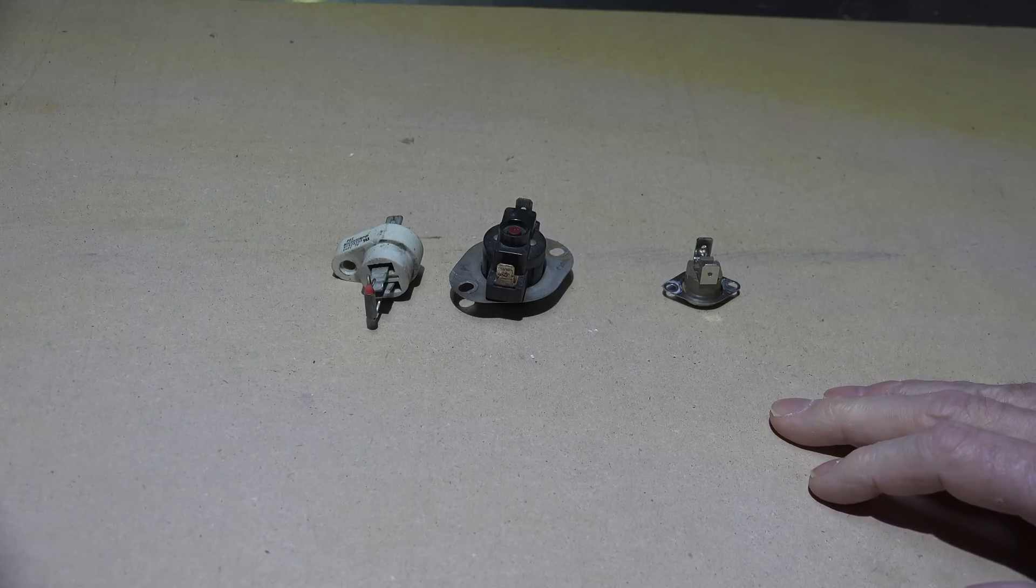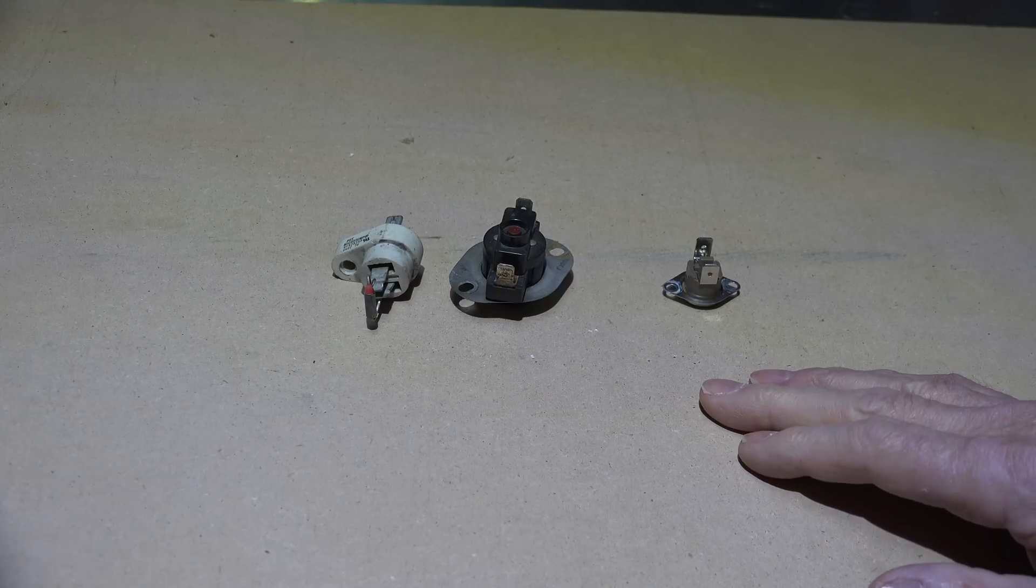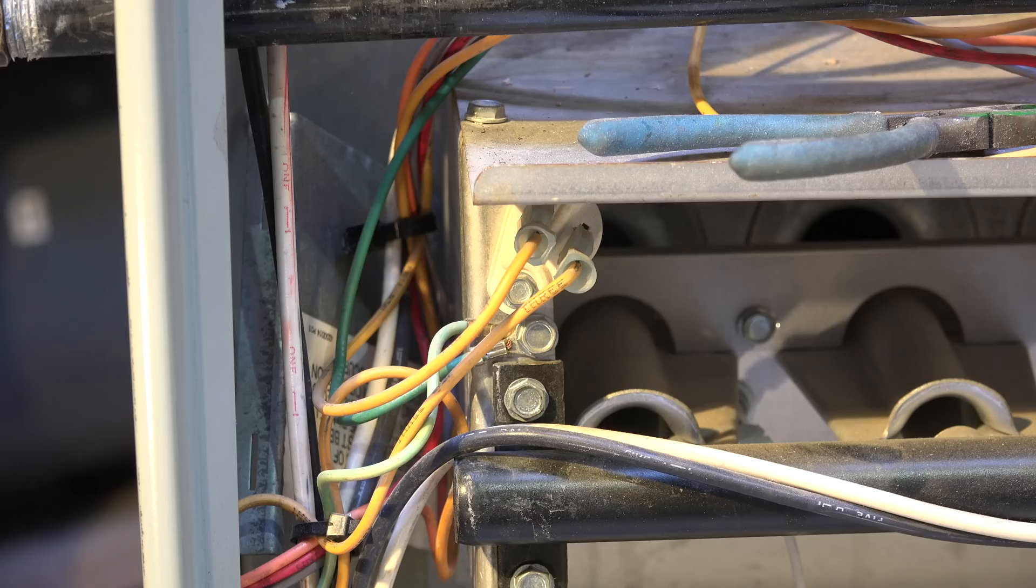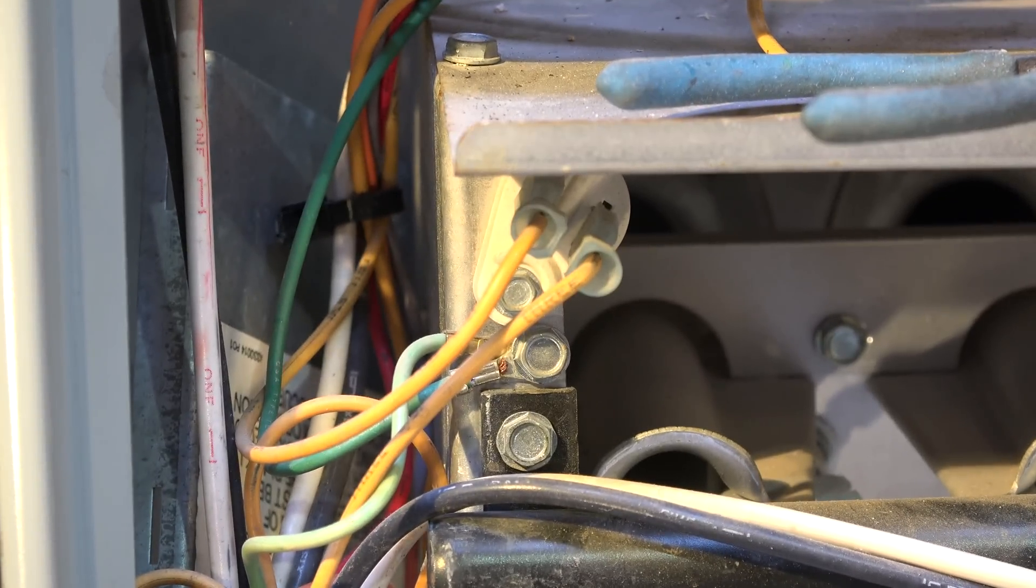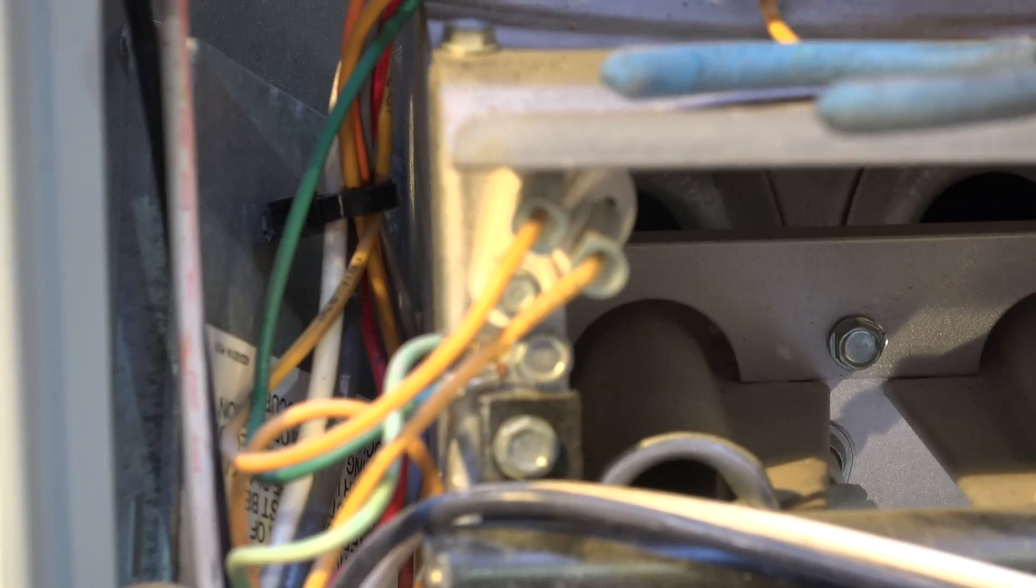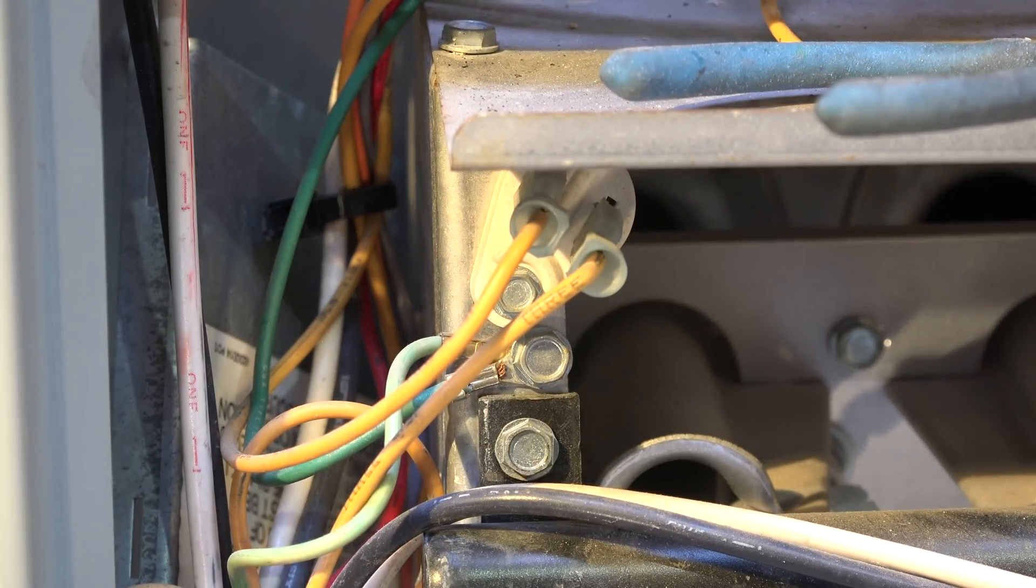Here we're looking at a furnace with a rollout switch. That's the thing right in the center, and you can see the burners down below. If the flame comes out the front and that one's a fuse, it will kick off and it will not reset.